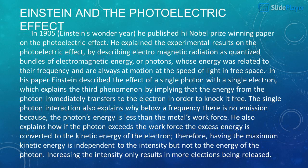The single photon interaction also explains why below a certain frequency there is no emission, because the photon's energy is less than the metal's work function. Einstein also explains how if the photon's energy exceeds the work function, the excess energy is converted to the kinetic energy of the electron — therefore, the maximum kinetic energy is independent of intensity but not of the photon's energy. Increasing the intensity only results in more electrons being released.